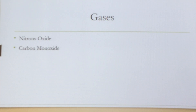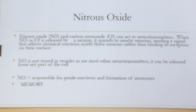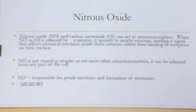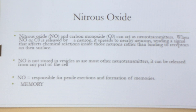We have gases that act as neurotransmitters — nitrous oxide and carbon monoxide. Nitrous oxide, chemically known as NO, and carbon monoxide, CO, act as neurotransmitters. When released by a neuron, they spread to nearby neurons, sending a signal that affects chemical reactions inside those neurons, and they do not have to bind like other neurotransmitters. Nitrous oxide is not stored in the vesicles — it can be released from any part of the cell. Nitrous oxide is also responsible for penile erections and for formation of memories.